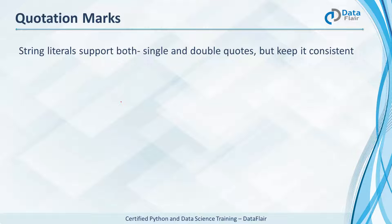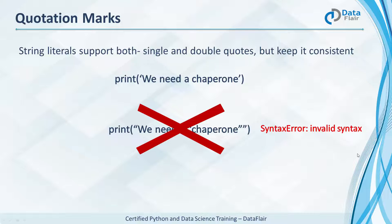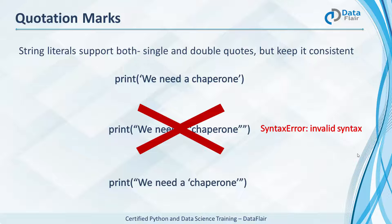When dealing with strings, you can surround them with single quotes or double quotes, but not both. You cannot begin a string with a single quote and end it with a double. When you need single quotes to be part of your string, you can delimit the entire string with double quotes instead, and vice versa.